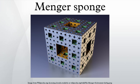Similar fractals include: a Jerusalem cube, which is a cube-based fractal with a Greek cross recursively removed from each face; a Moseley snowflake, a cube-based fractal with corners recursively removed; and a Tetrix, a tetrahedron-based fractal with tetrahedrons in its middle recursively removed.